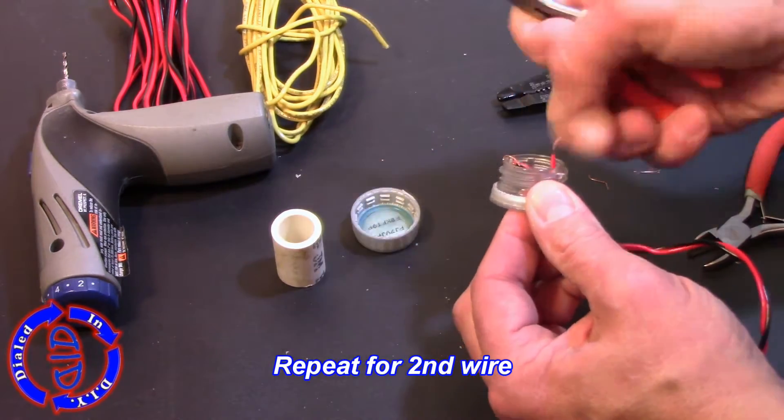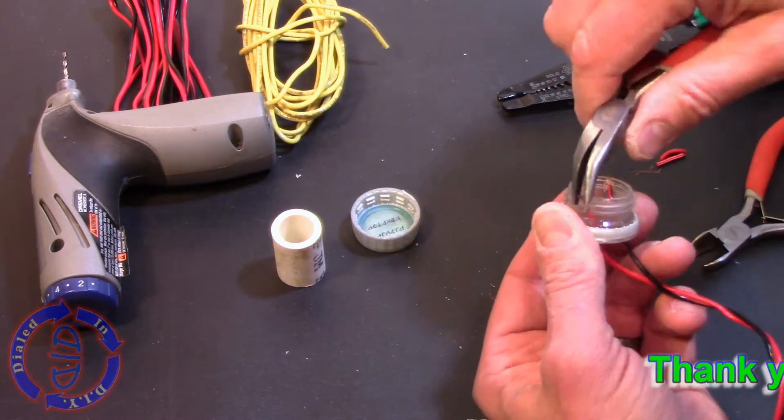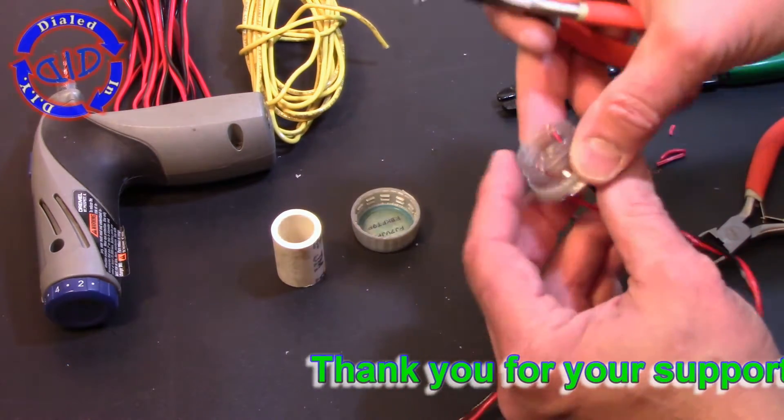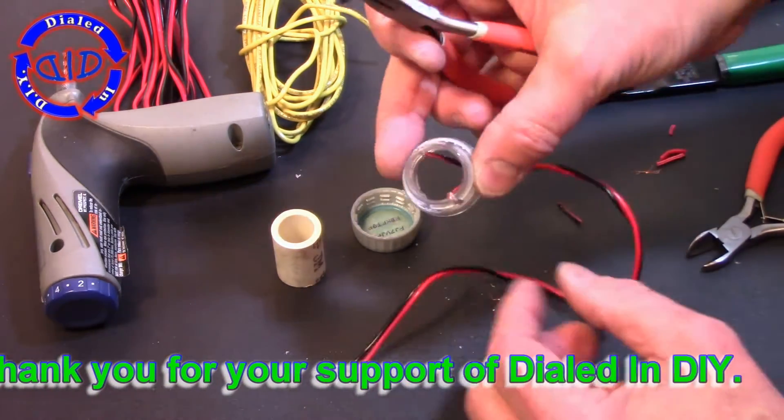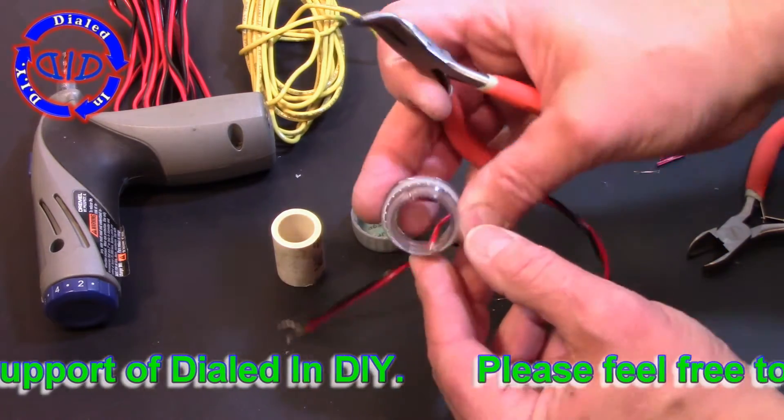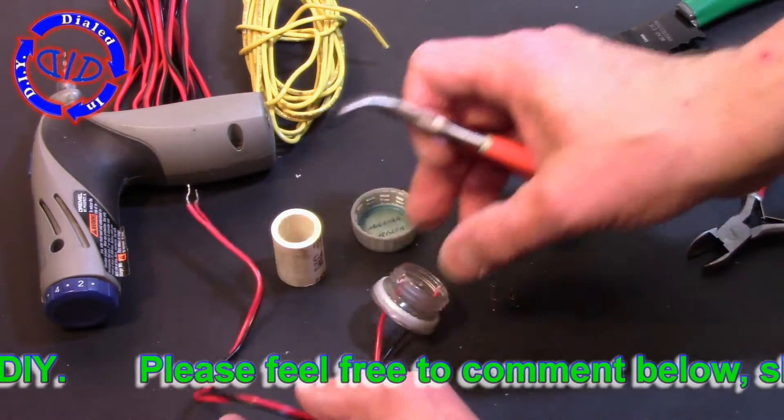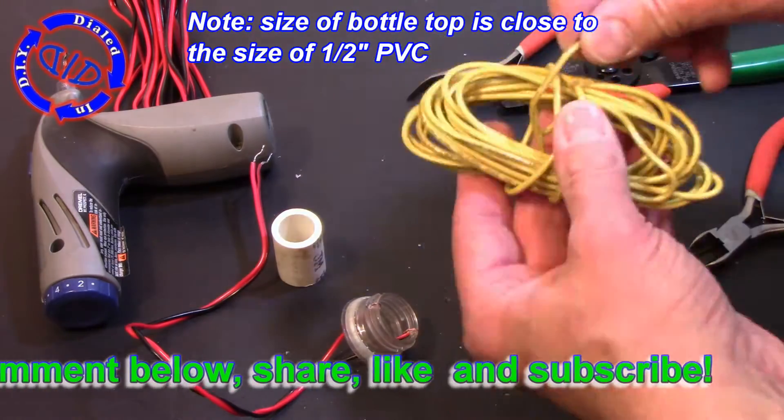Now all you need to do is go ahead and repeat the process for the second wire on the other side of the cap as well. When you're done you're gonna notice that the wire does stick just a bit over the top of the cap which is exactly what you want, and you're gonna see why that's important in just a minute or two.